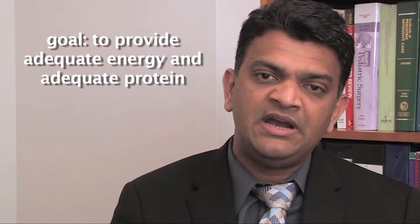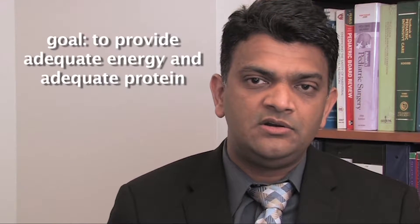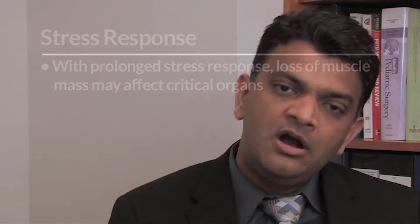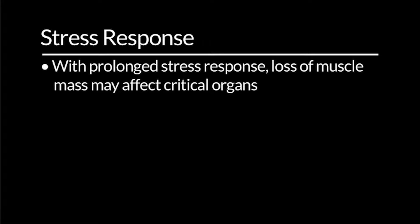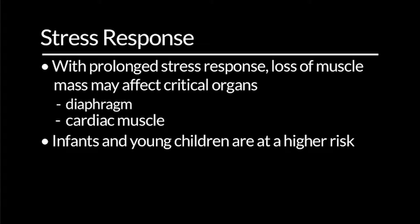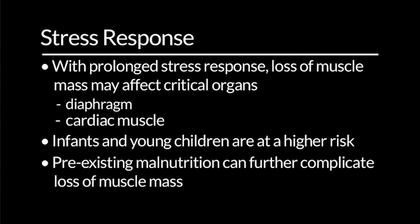The summary of this slide suggests that the main goal of nutrition therapy during this critical phase should be to provide adequate energy — not too much and not too little — and adequate protein. If the stress response is prolonged, degradation of muscle mass may actually begin to affect critical organs such as the diaphragm and cardiac muscle. In younger children, there is already a lower amount of muscle mass relative to total body weight, and pre-existing malnutrition means these children can ill afford further muscle mass loss during critical illness.